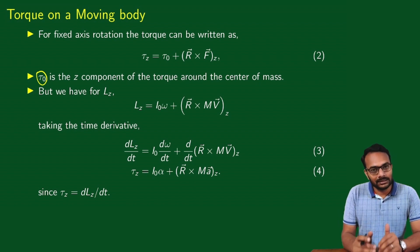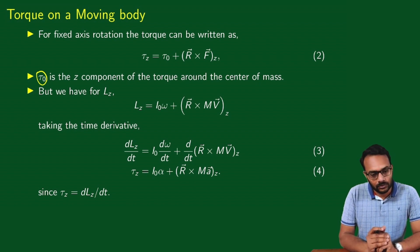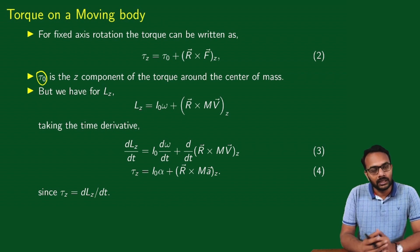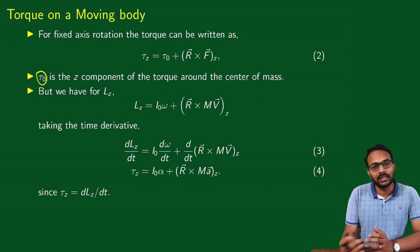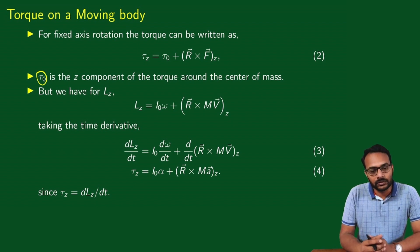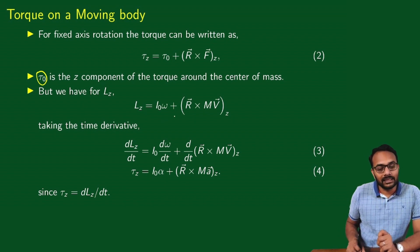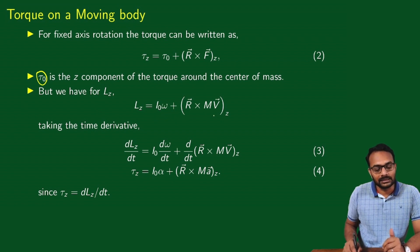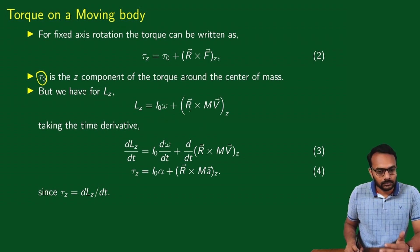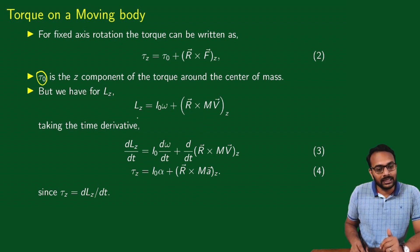Now, starting from the orbital angular momentum: the torque is the time derivative of the orbital angular momentum. Lz is already known: Lz = I0*omega + the z-component of R cross Mv. We now take the time derivative — dLz by dt.